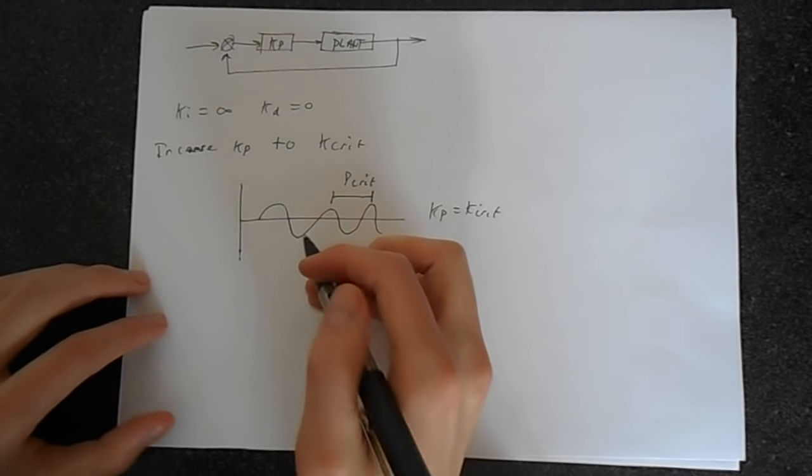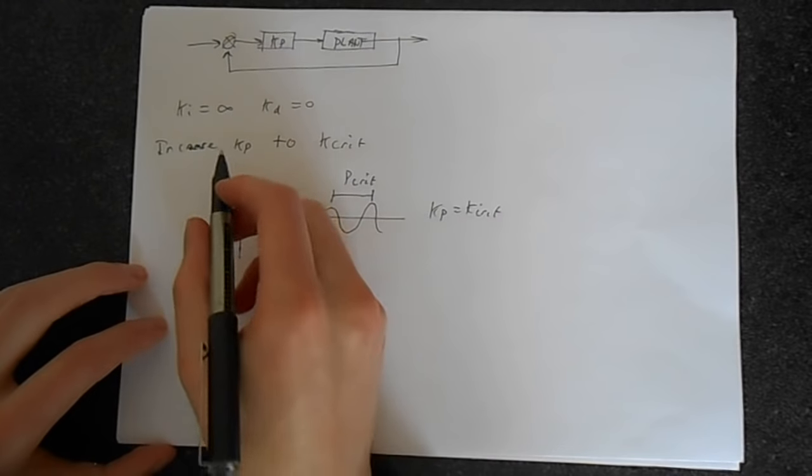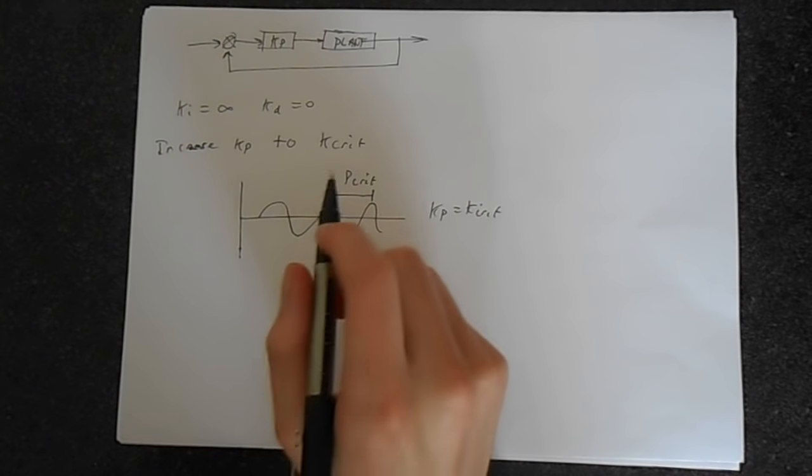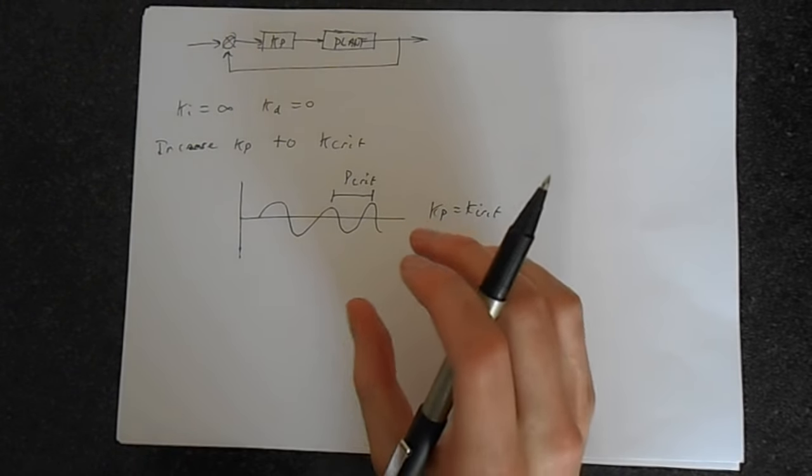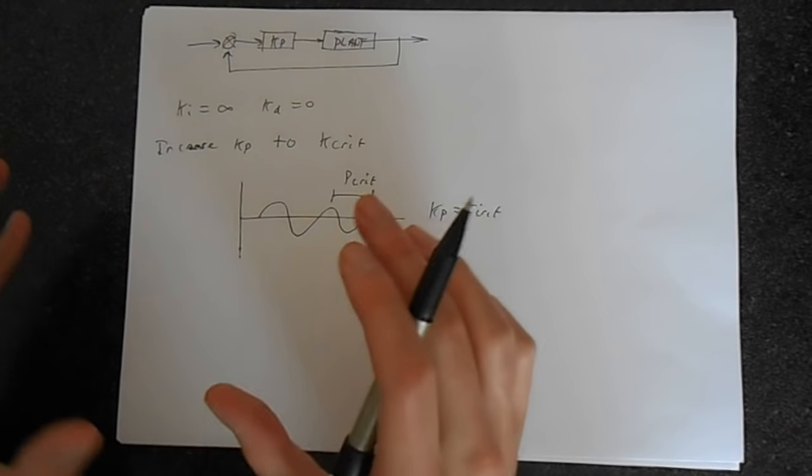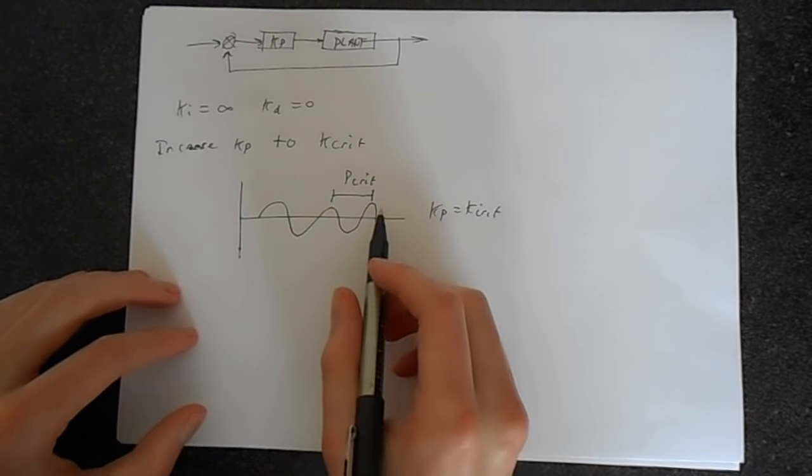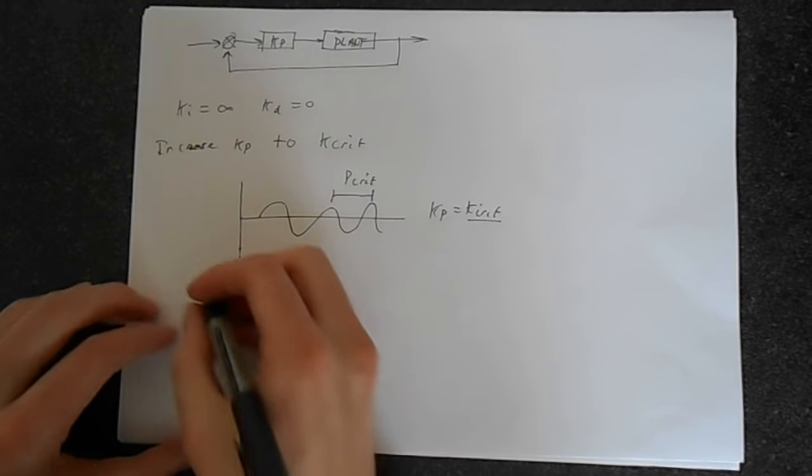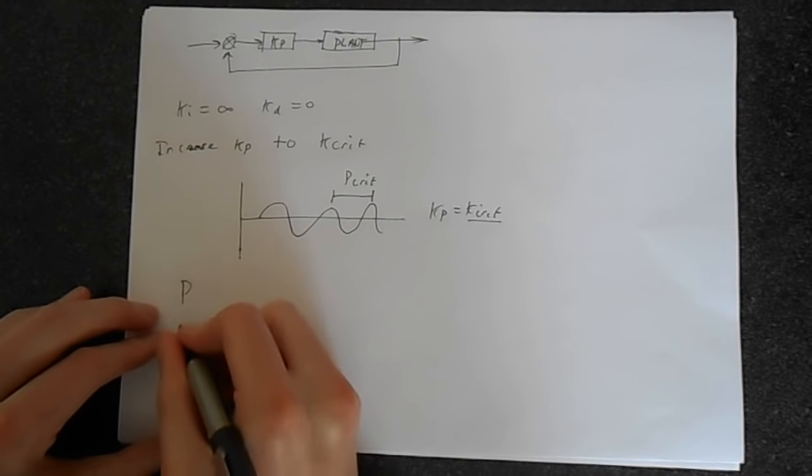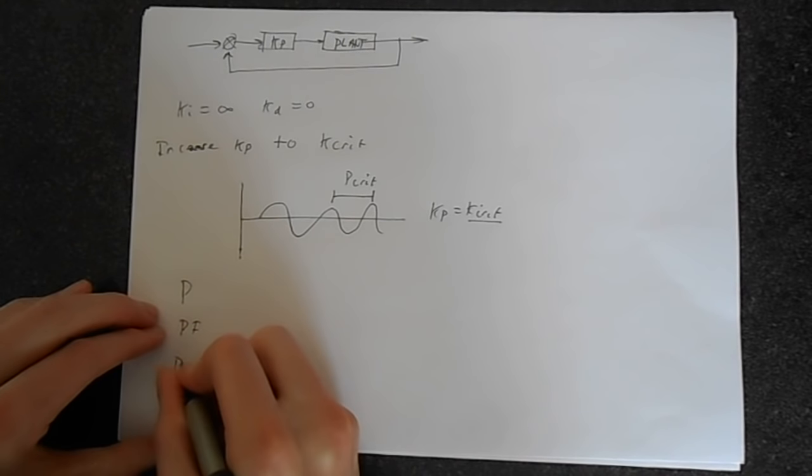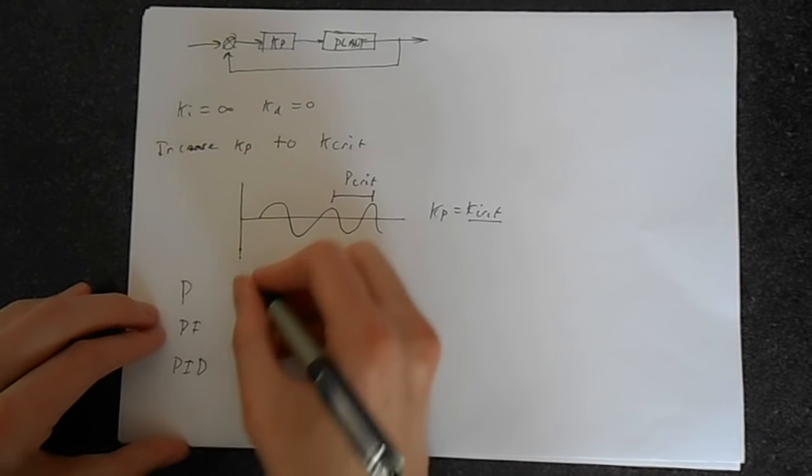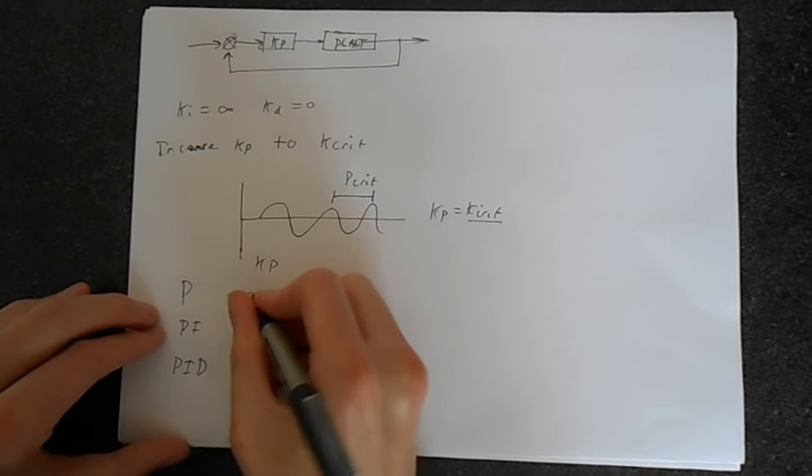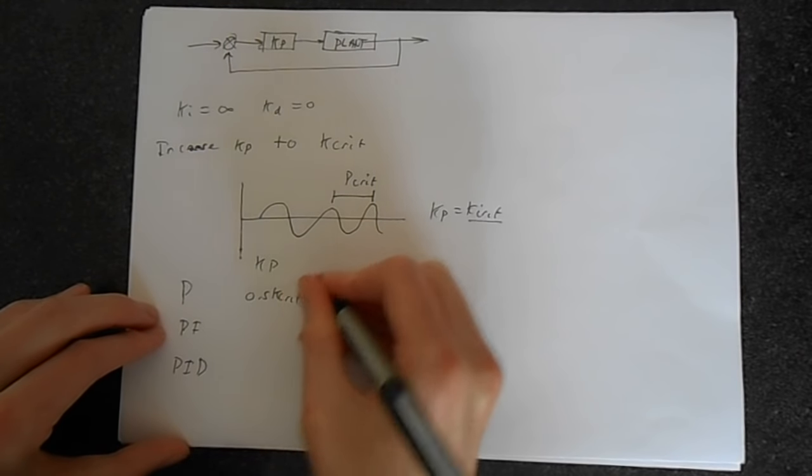Okay, very simple. Just simulate this system, increasing KP until it becomes marginally stable. So it's just first exhibiting sustained oscillations. Something like this. And we have the value kcrit and this value pcrit. And then we can just get this table: P, PI, and then PID.